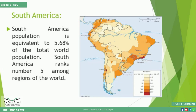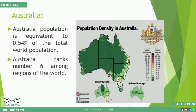At the fifth position, 5.68 percent of the world's total population lives. This is the sixth rank, which is Australia.